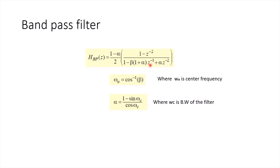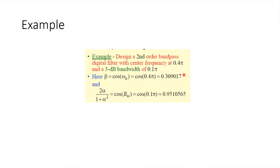The beauty of this transfer function is that alpha and beta are independent of each other and control different things. Beta controls the center frequency of the band pass filter, and alpha controls the bandwidth. So we can easily control the bandwidth without changing the center frequency, and vice versa.